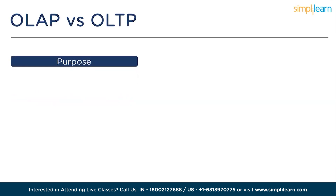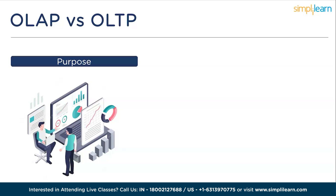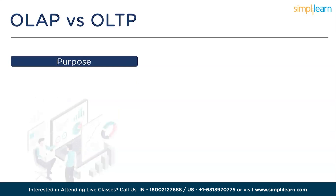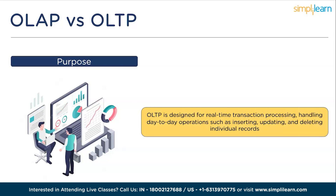First, we look at purpose. OLAP focuses on reporting, enabling users to gain insights from large volumes of historical data. It provides aggregated and summarized views of the data. OLTP is designed for real-time transactional processing, handling day-to-day operations such as inserting, updating, and deleting individual records. Its primary objective is to ensure data integrity and support high-speed transactional operations.